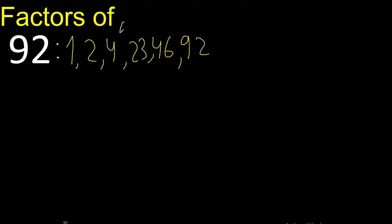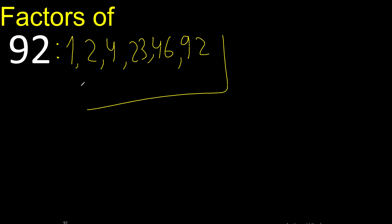92 cannot be divided by 6, 7, 8, etc. But 92 can be divided by 23 — and 23 is already listed here. Therefore we are finished.